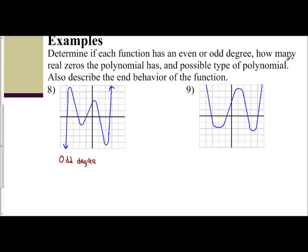How many real zeros does the polynomial have? Real zeros are your x-intercepts. Counting them: one, two, three, four, five — so there are five real zeros. The possible type of polynomial: if it has five real zeros, that means it can be a quintic polynomial.